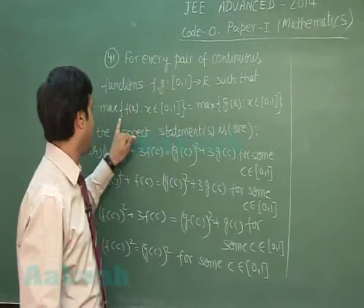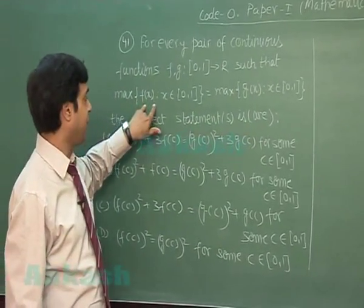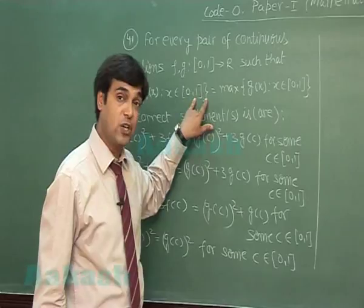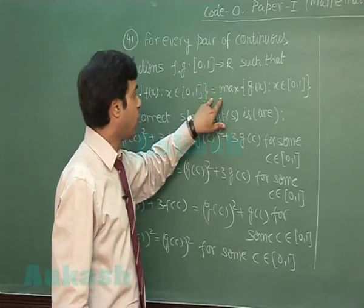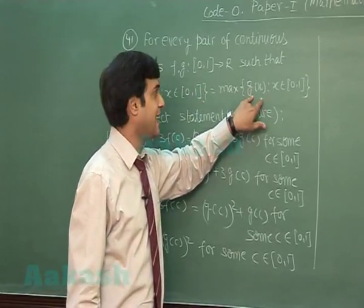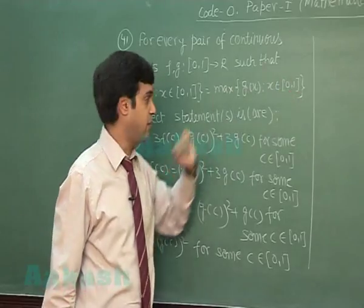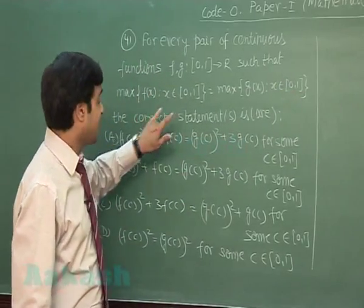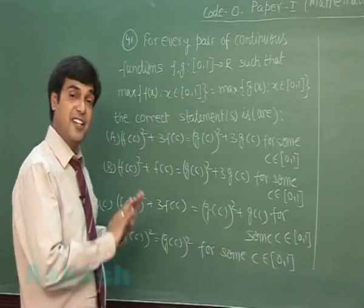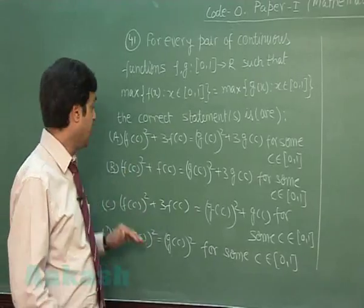numbers such that max{f(x): x ∈ [0,1]} = max{g(x): x ∈ [0,1]}, the correct statement is... This is a multiple answer type question, so we have to choose the correct options based on this information.